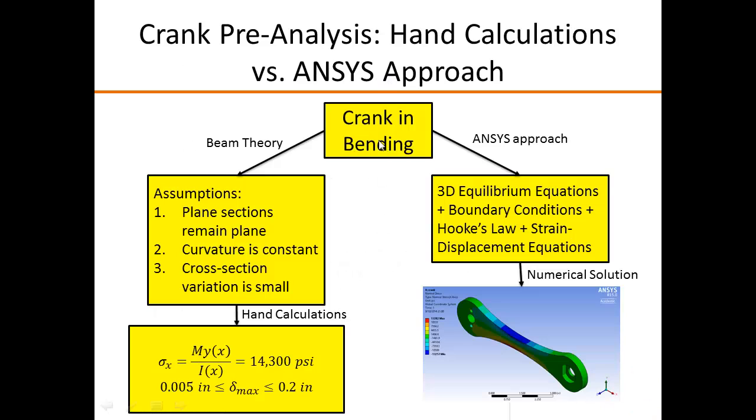And here, in this slide, we are trying to compare the hand calculation approach to the ANSYS approach. How are the mathematical models same or different? So we have a physical problem, and in the ANSYS approach, we are solving the 3D equilibrium equations. And using ANSYS, we can directly solve that and do a numerical solution. Now, when we are doing the hand calculations using beam theory...